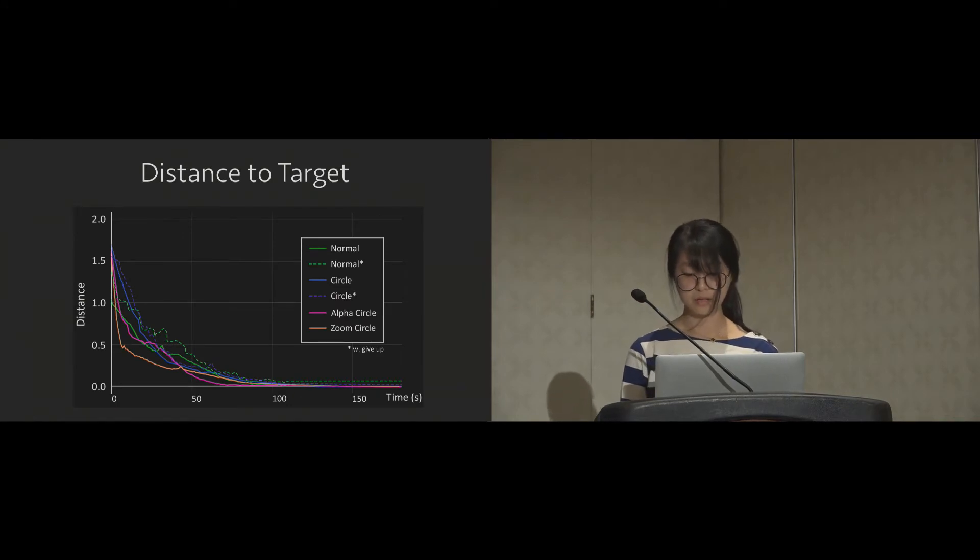In this figure, we plot the median distance from user's viewing direction to target along the time in each mode. We can see that the distance of alpha circle and zoom circle mode drops significantly faster than the other mode during the first 20 seconds, which suggests that both of them helps the navigation. Here, the solid line only includes subjects completing the test, whereas the dash lines include the give up data as well.